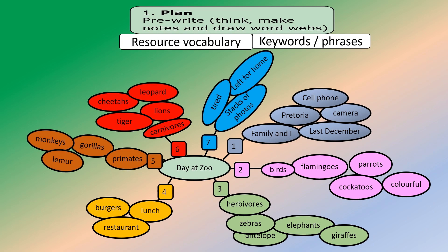Second paragraph — birds: flamingos, parrots, cockatoos, colorful. Those cages in a zoo are normally together. The next place to visit would be the herbivores: zebras, elephants, antelope, and giraffes. Then lunch — we ate burgers at a restaurant. Number five — primates: apes, monkeys, gorillas, and lemurs, normally in their same area. Paragraph six — carnivores, animals that eat meat: lions, tiger, leopard, cheetahs.